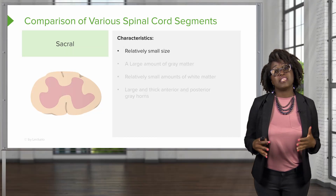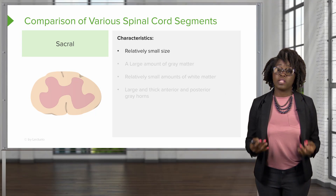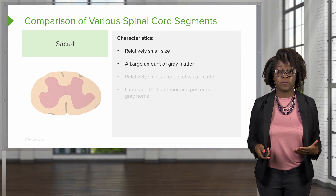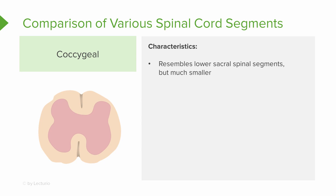The next segment is the sacral. The sacral spinal cord segment is relatively small, but it actually has a pretty large amount of gray matter. The amount of white matter is also very small. And it contains large and thick anterior and posterior gray horns. The final spinal cord segment, or the coccygeal segment, resembles the lower sacral spinal segments. It is just much smaller.